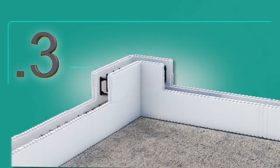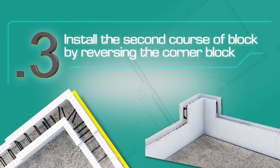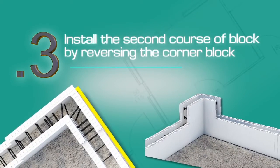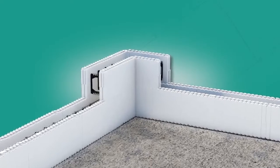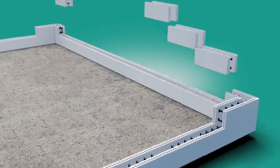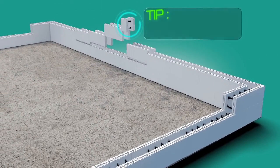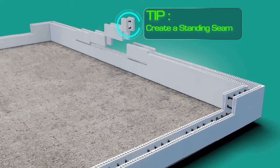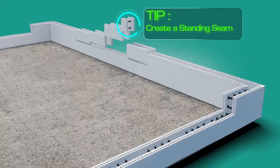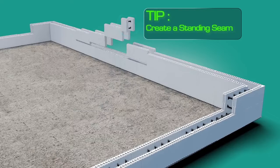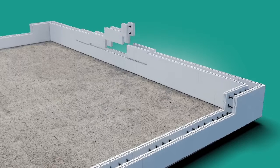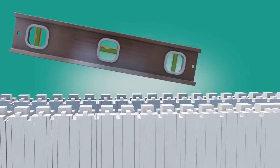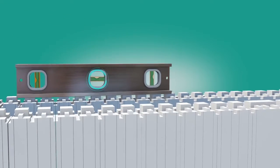Install the second course of block by reversing the corner blocks so that the second course is offset from the first in a running bond pattern. At this point, check for level across all of the blocks. If the courses are not level, use shims or trim the block as required.